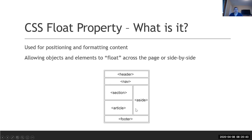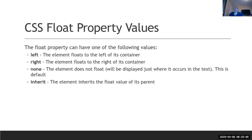Our goal is to get our page to have the nav on the left and the article on the right. The float property has four values: a float of left to move things to the left side of the screen, a float of right to move things to the right side of the screen, and none, which is actually the default float value of all elements.